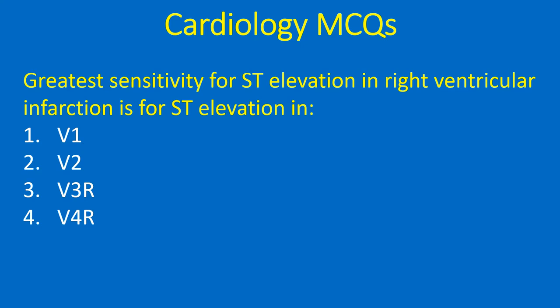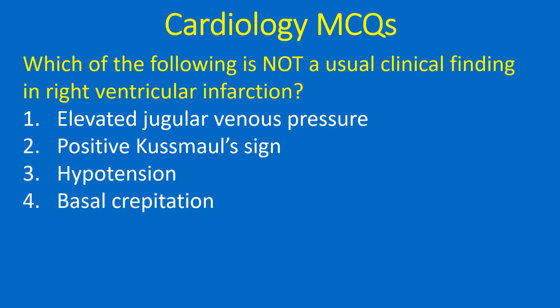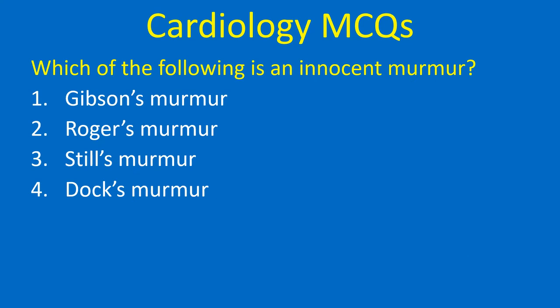Greatest sensitivity for ST elevation in right ventricular infarction is for ST elevation in: 1. V1, 2. V2, 3. V3R, 4. V4R. Correct answer: V4R. ST elevation of 1 mm or more in V4R had the greatest sensitivity of 93% and predictive accuracy of 93% for right ventricular myocardial infarction. In right ventricular infarction, pulmonary capillary pressure is usually low due to reduced right ventricular output and left ventricular preload.